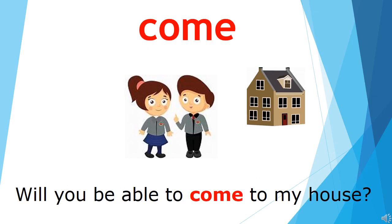The word is 'come.' The meaning of come is when you want to call someone near to you, we use 'come.' You can see here a girl and a boy, and the boy is asking the girl, 'Will you be able to come to my house?' We can also use 'come' in different ways, like 'Come to my place' or 'Come to my home and have dinner with me.' You can use this word in different situations and in different ways.